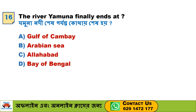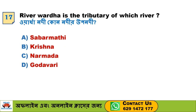Next question: The river Yamuna finally ends at — Option A. Gulf of Cambay, Option B. Arabian Sea, Option C. Allahabad, Option D. Bay of Bengal. Option C, Allahabad, is the correct answer.